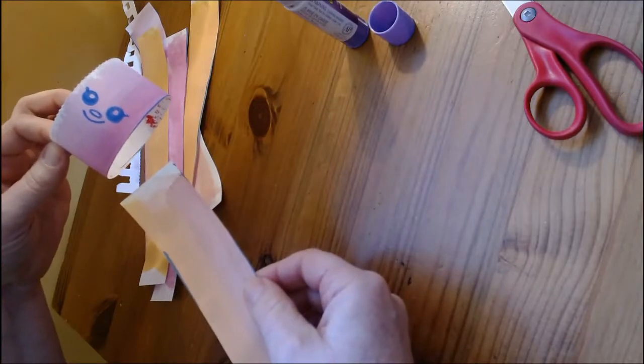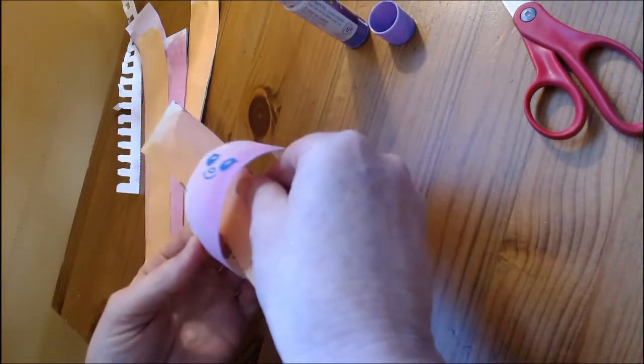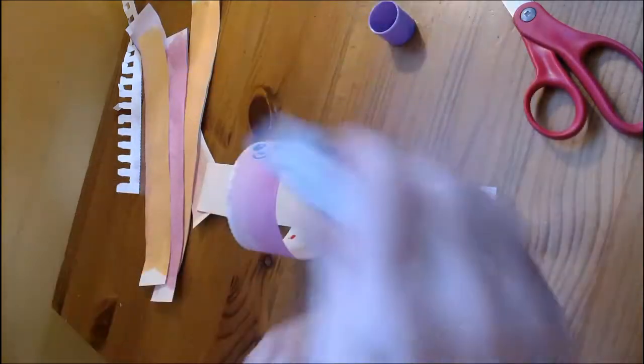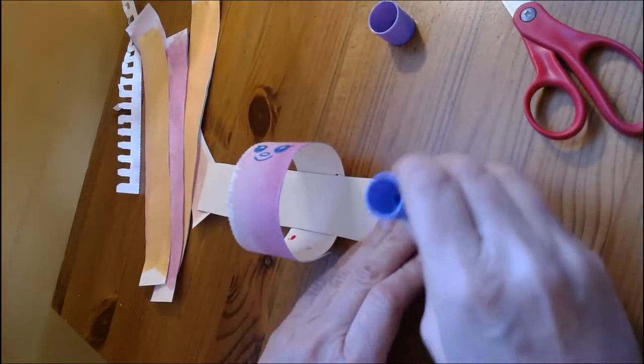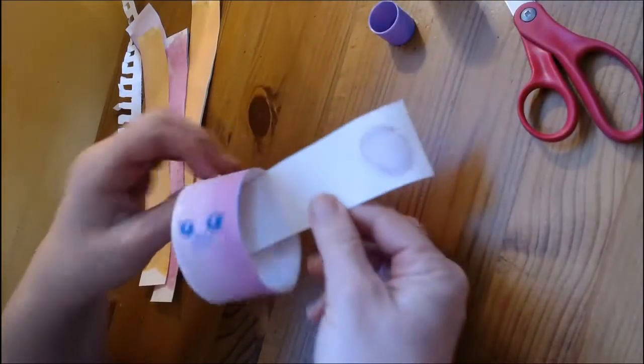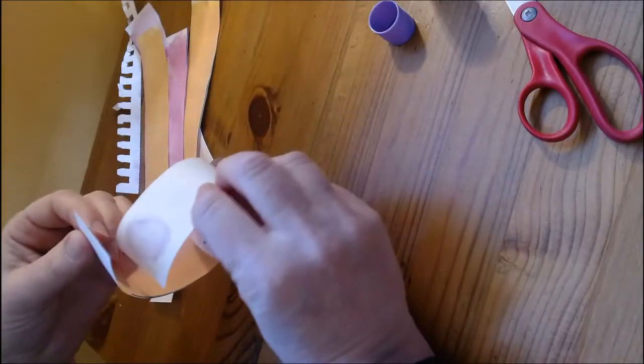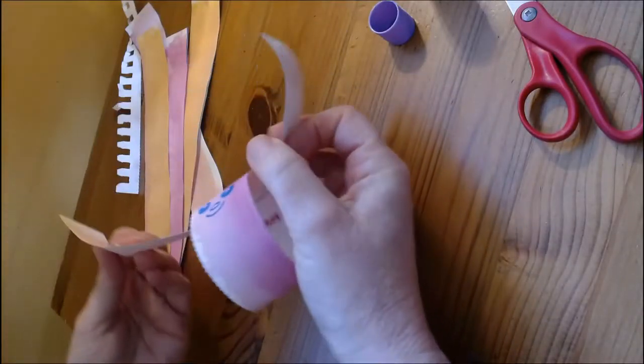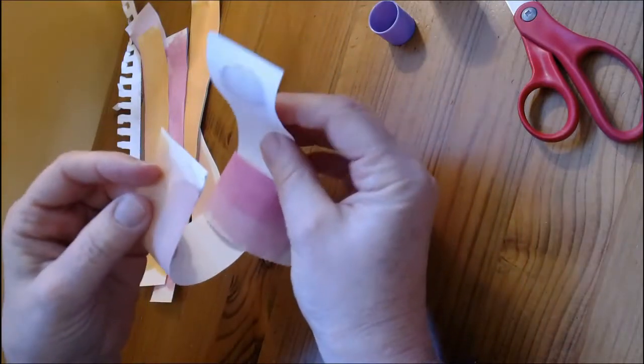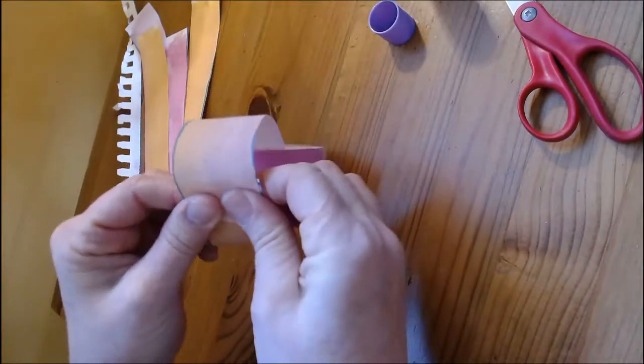Now we take the next paper strip we want and put it through. I want to make sure that because I have colored paper that the color is what we see. So when I make my loops I have to be careful. I don't want the color on the inside. So I have to make sure that it flips so that the color is on the outside. And I press.